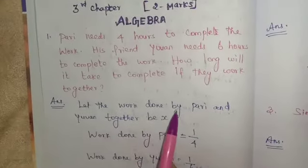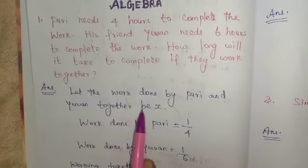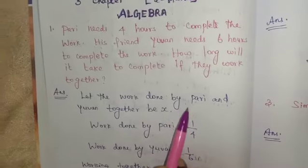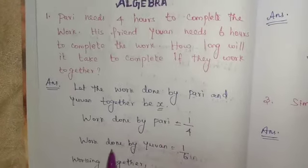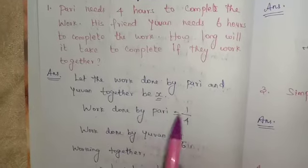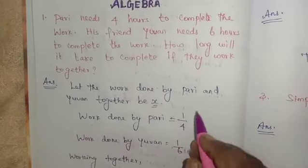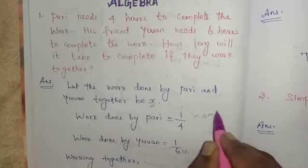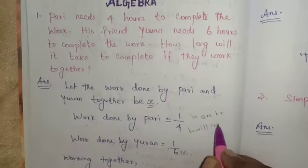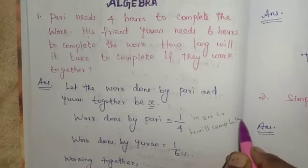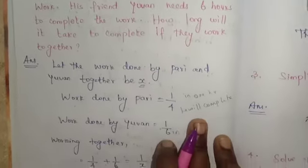First, let the work done by Pari and Yuen together be X. Pari will complete 1 by 4 of the work in 1 hour. Why? In 1 hour, he will complete one-fourth of the work.